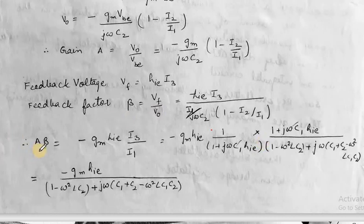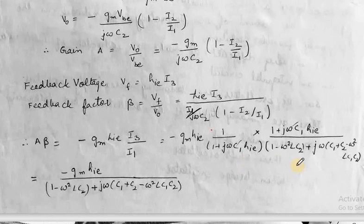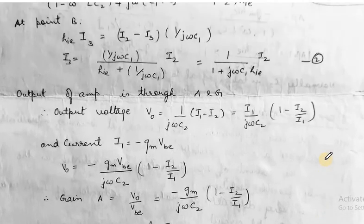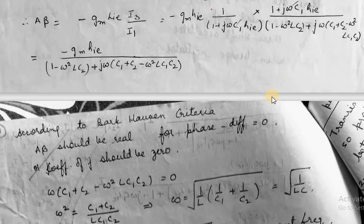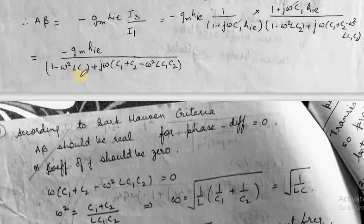Now we multiply A into beta. The reason we kept A and beta in terms of I2/I1 is that when we multiply A × beta, those terms cancel out. On multiplication we obtain A·β = −Gm·HIE·(I3/I1). We now place the value of I3/I1, and after these terms cancel, we finally get A·β = −Gm·HIE / [1 − ω²·L·C2 + j·ω·(C1 + C2) − ω²·L·C1·C2].